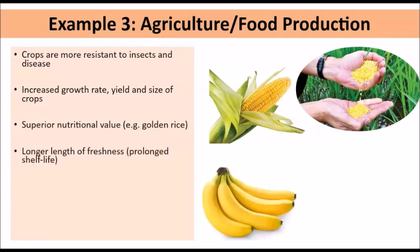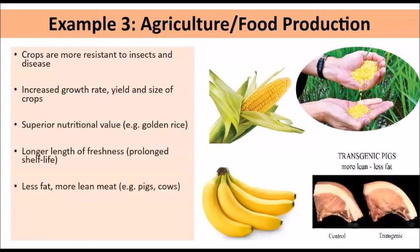In addition to nutritional value, genetic engineering can provide a longer length of freshness, improving the shelf life of crops. For instance, bananas that would typically go bad after a few days may be able to last longer. In terms of animals such as pigs and cows, they can be engineered to produce meat with less fat and more lean meat. Farmers can also reduce the need for chemicals such as fertilizers and pesticides. These are some of the key benefits of employing genetic engineering in agriculture.